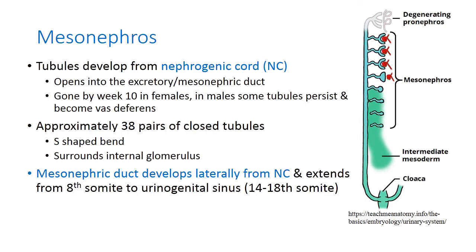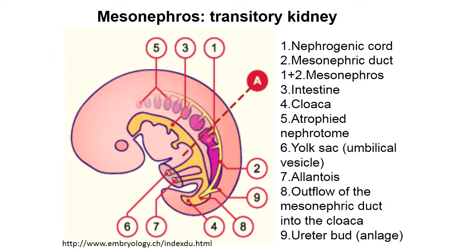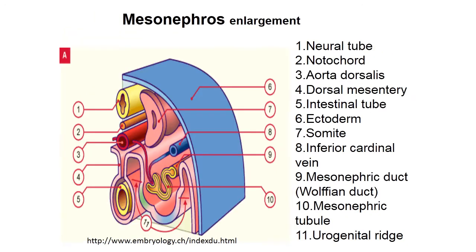On this picture you can distinguish two parts: the nephrogenic cords and mesonephric ducts. On another picture, the mesonephric tubules are clearly visible, along with the first distinguished nephrons.